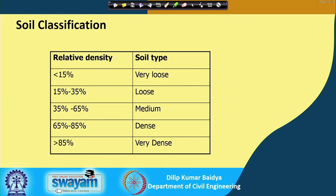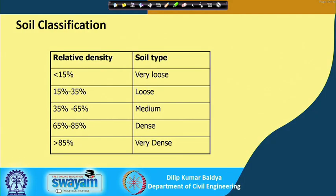Relative density greater than 85 percent is very difficult to achieve, though sometimes 90–95 percent may be achieved. These are the classifications based on relative density — if you carry out the test, find emax, emin, and in-situ void ratio, calculate Dr, and based on its value you can classify the soil as very loose, loose, medium dense, or very dense. Loose means the soil is in very poor condition; dense or very dense means the soil is in a good condition — this is another type of classification to assess strength and compressibility.